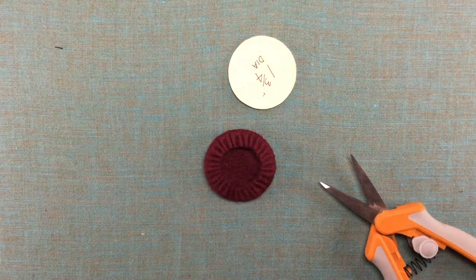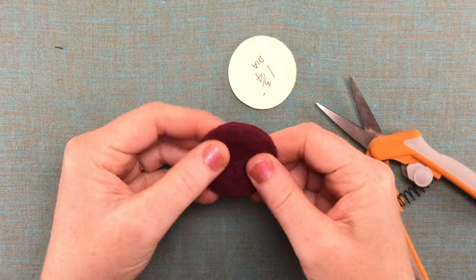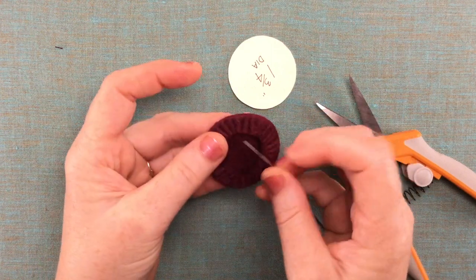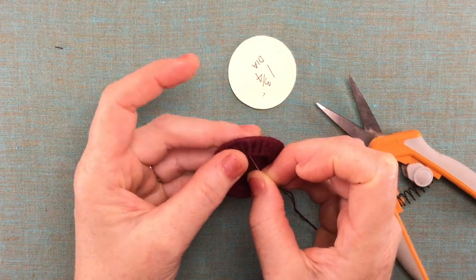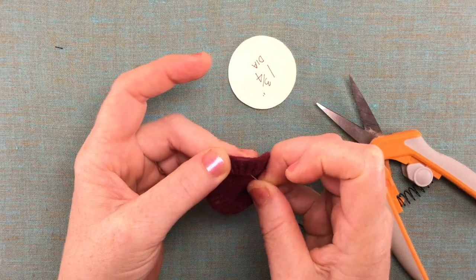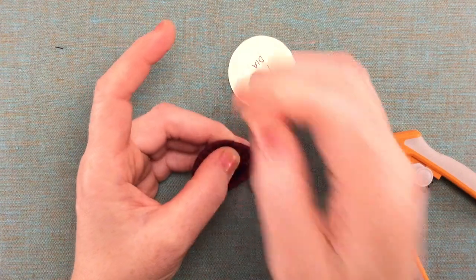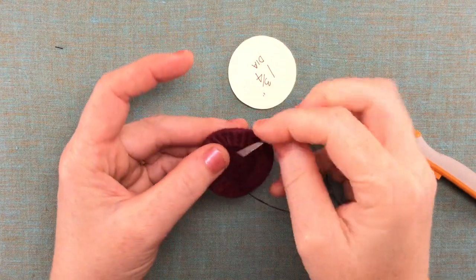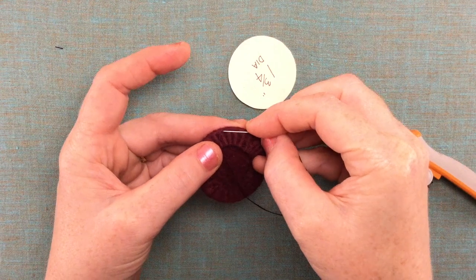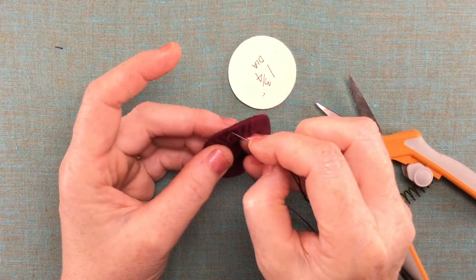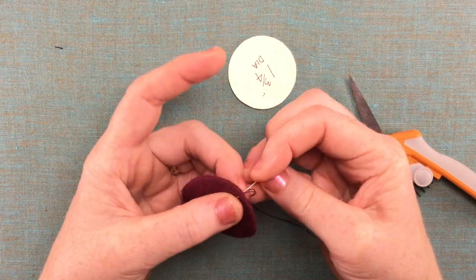What we want to do is put our needle through the edge from inside the hat like this. So you can see I'm about a sixteenth of an inch away from that edge and that's where we want our running stitch to be.